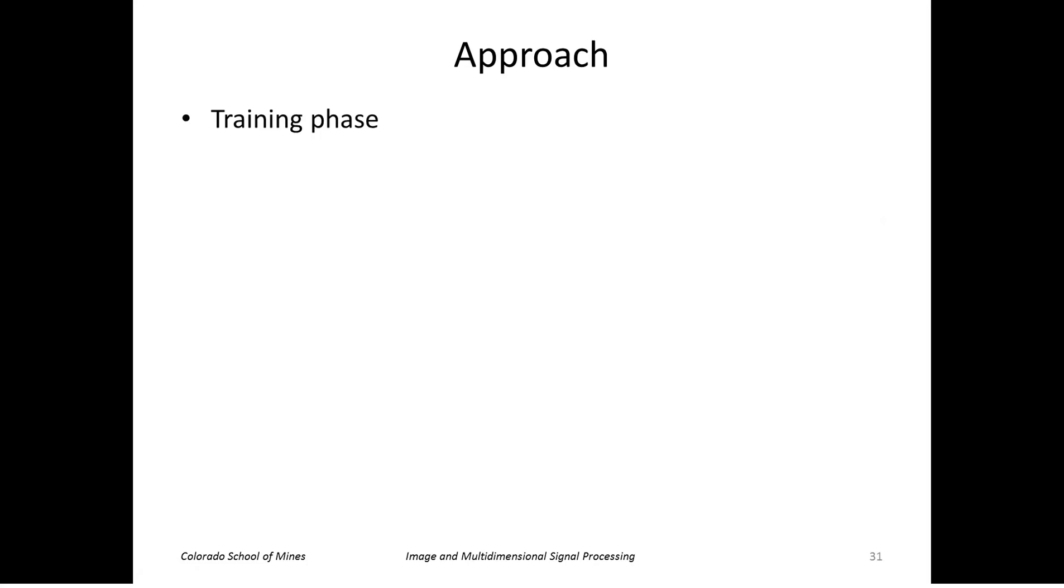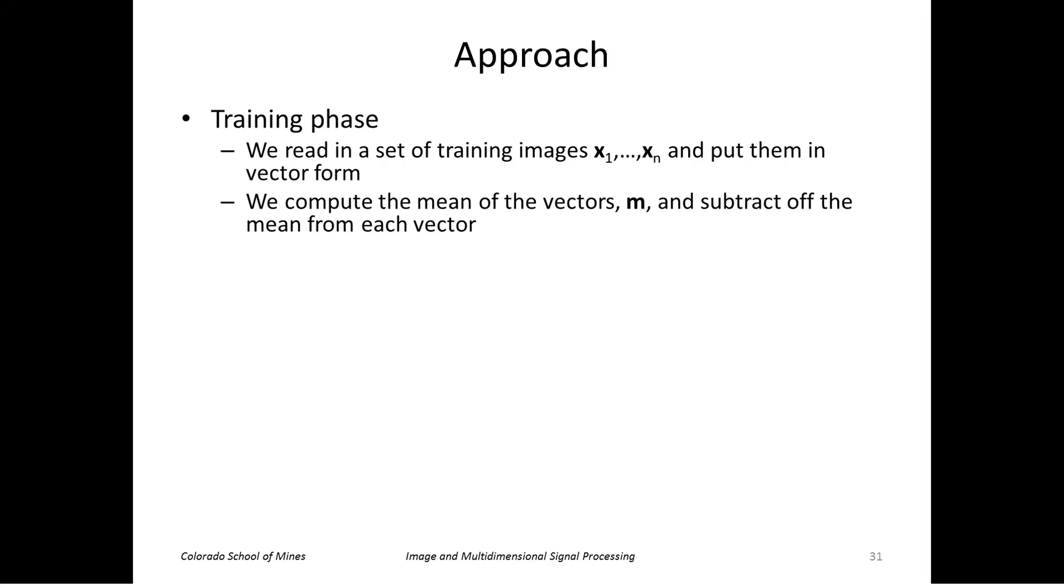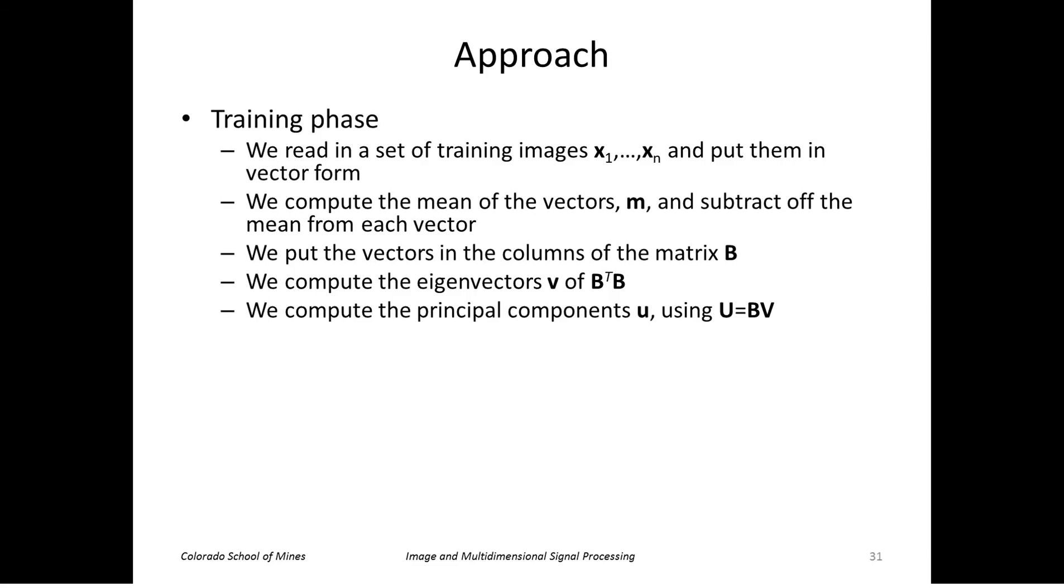So our approach then is: we read in a set of training images, a database, put them into vector form, compute the mean and subtract off that mean, put the vectors into the columns of a matrix B. Compute the eigenvectors of B transpose B. Compute the principal components of what we really want by multiplying B times V. So V is the matrix composed of all the eigenvectors. So those are our principal components.